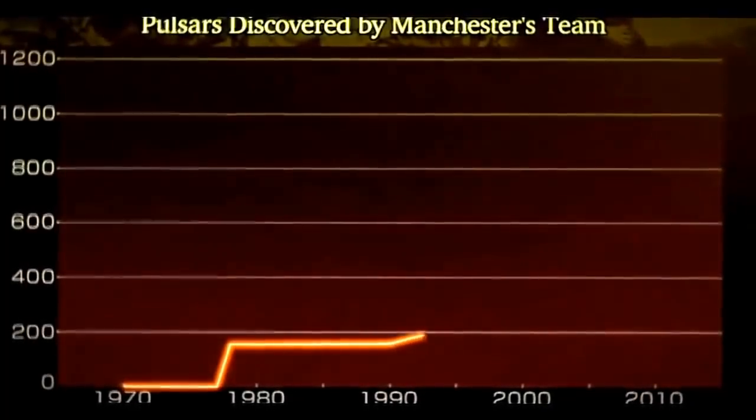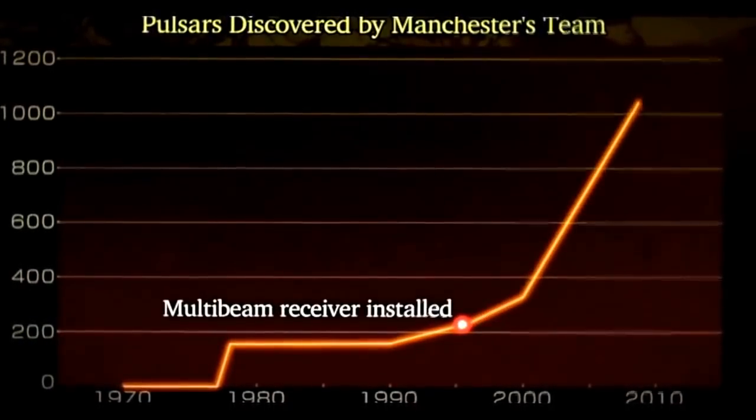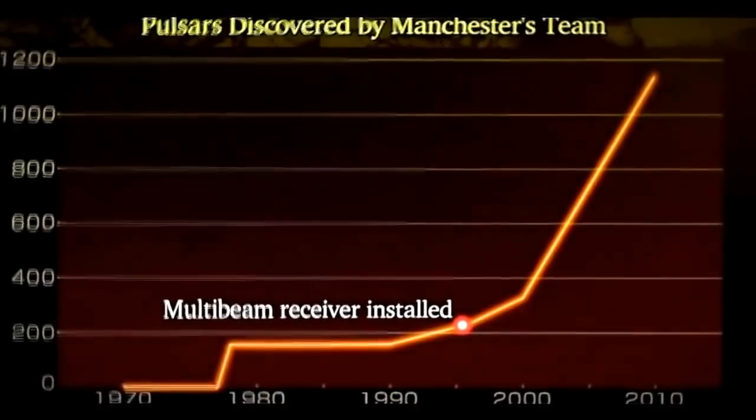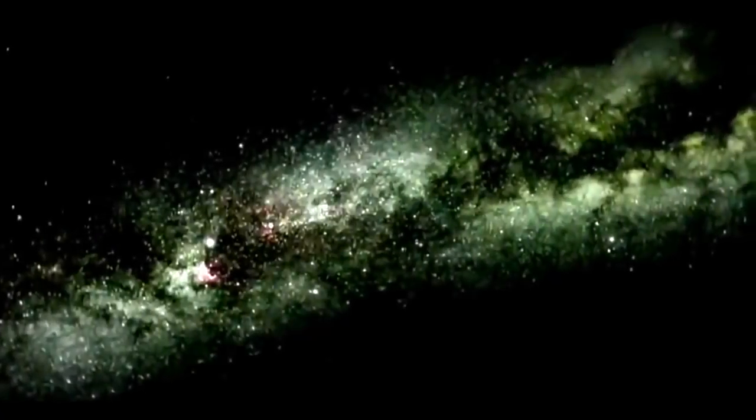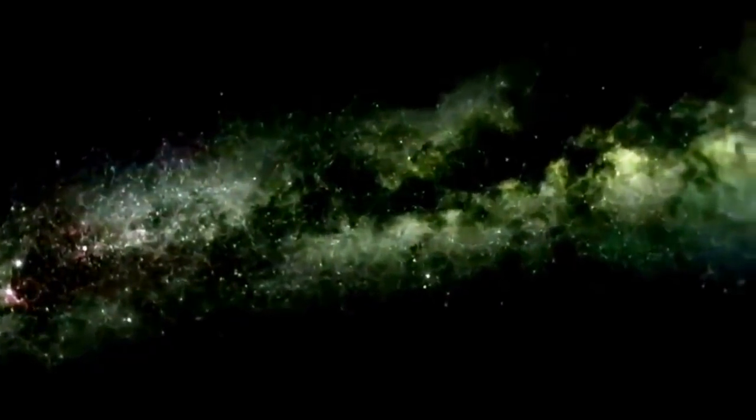Once the multi-beam receiver was introduced, pulsar identifications increased dramatically. Manchester's team soon found more than 1,100 of them. Thanks to the efforts of astronomers around the world, that number has reached roughly 2,000.